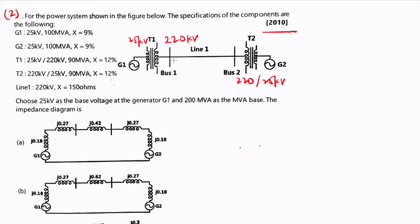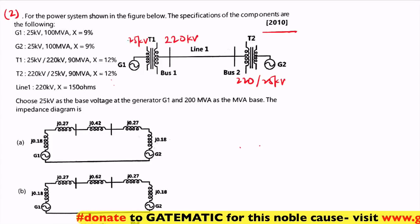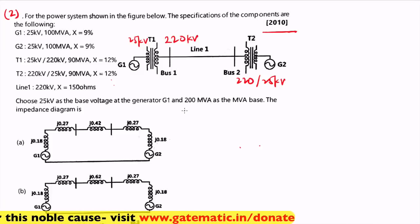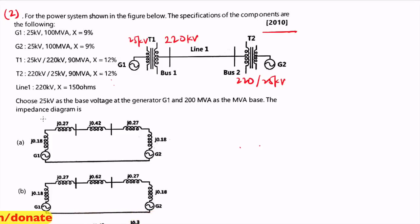The line reactance is 150 ohms at 220 kV base. The question says: choose 25 kV as base voltage at generator G1 and 200 MVA as the MVA base, then draw the impedance diagram. The base voltage at G1 is 25 kV and the given rating is also at 25 kV, so the base voltage does not change — this is a case 2 problem.